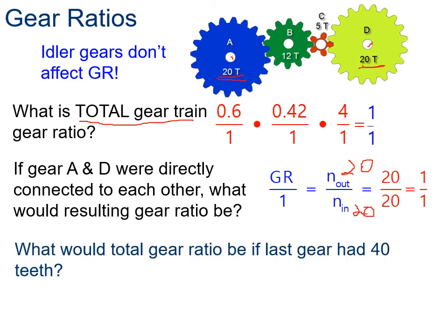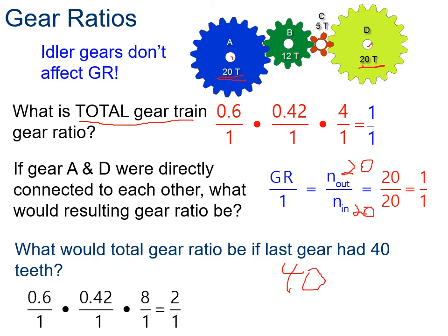If the last gear had 40 teeth instead, the gear ratio would be 2 to 1, because N-out would be 40 divided by N-in which is 20, giving 40 over 20 equals 2.